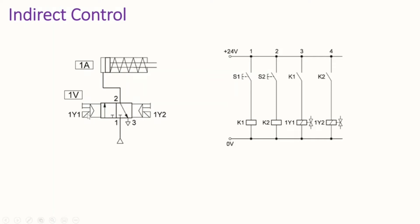Whenever we turn on — push — switch S1, current passes through the line, K1 is energized, and from there we close make switch K1. Therefore current will pass to solenoid 1Y1, it is energized, and we will have this valve electrically actuated, right-shifting to the second position. Air will pass and we will have the pressure needed to overcome the spring force inside the cylinder, resulting in the piston advancing.